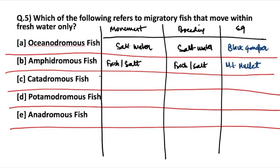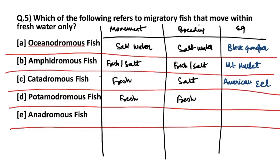Catadromous fish are migratory fish that live in fresh water but breed in salt water. Examples include American eels and European eels. Potomodromous fish move within fresh water only and also breed in fresh water only. So oceanodromous is the opposite of potomodromous — oceanodromous is salt water/salt water, potomodromous is fresh water/fresh water. An example of potomodromous fish is the flathead catfish.